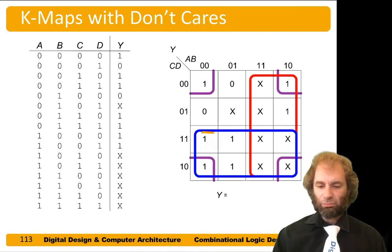Starting with this blue block. A and B are 00, 11, 11, 10 - all possibilities. So A and B don't matter. C is one on both of these, and D is either zero or one, so it doesn't matter. The blue block just corresponds to C.